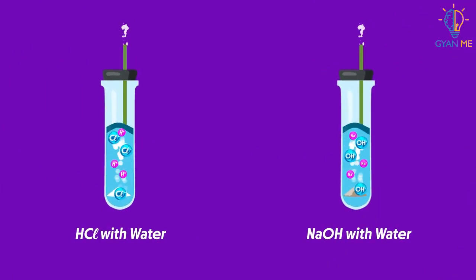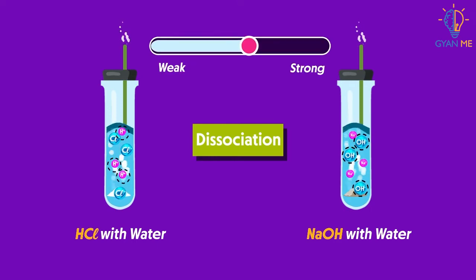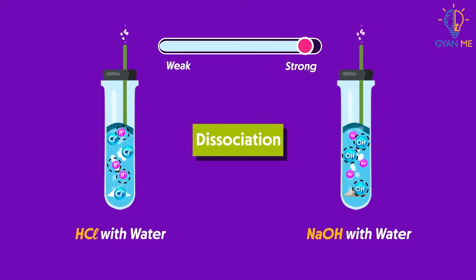Students, now we know that whenever any acid or base is added to water, their ions get separated from each other. This process of separation of ions in water is known as dissociation. Students, this property of dissociation is very important because it tells us how strong an acid or base is. The details about it you will study in your higher classes.